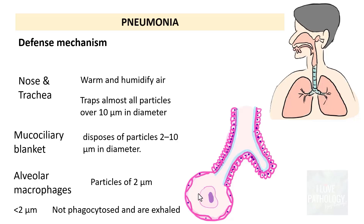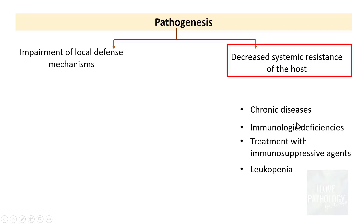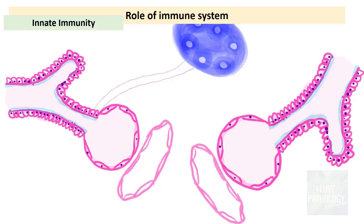Pulmonary infection develops when there is decreased systemic resistance of the host or impairment of local defense mechanisms. Systemic resistance is reduced in individuals suffering from various chronic diseases, immunologic deficiencies, treatment with immunosuppressive agents, or leukopenia. To understand how immunologic deficiencies increase susceptibility, we need to understand the role of the normal immune system — both the innate and adaptive components.